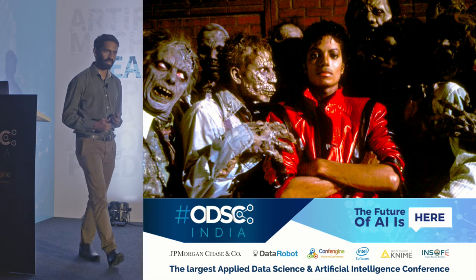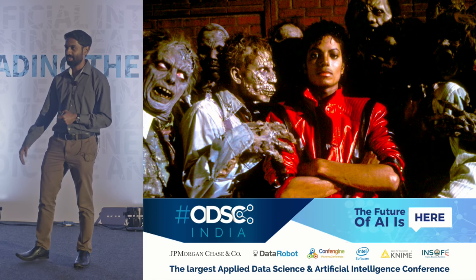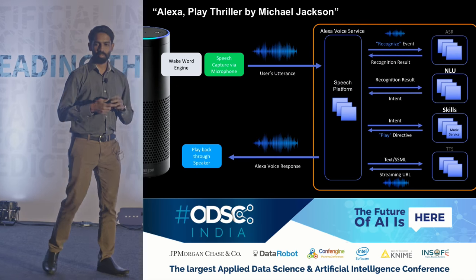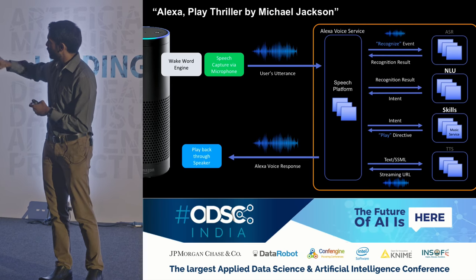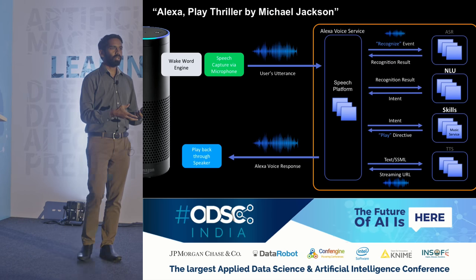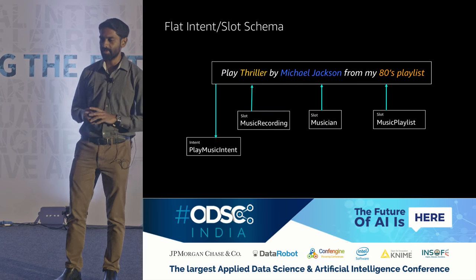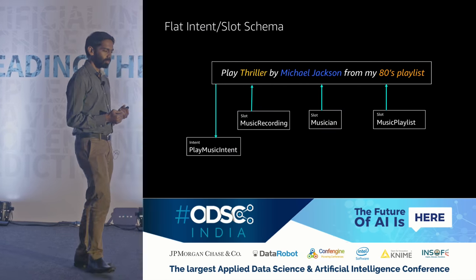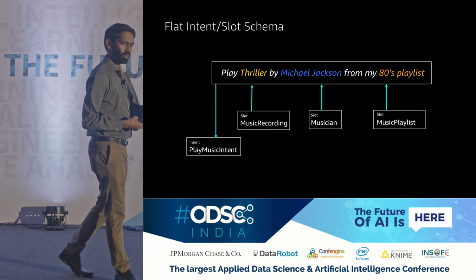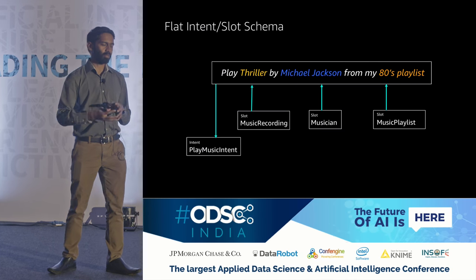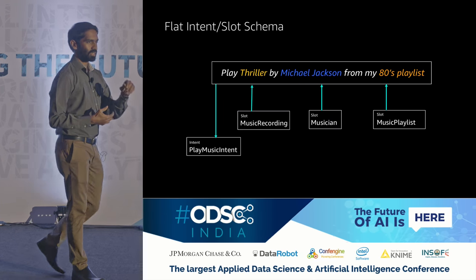I'll use one specific example — Michael Jackson's Thriller, one of the greatest music videos ever. Suppose someone says 'Alexa, play Thriller by Michael Jackson.' The ASR does its work fairly easily, picking up what the user said, and now it goes to the NLU — natural language understanding. When someone says 'Alexa, play Thriller by Michael Jackson from my 1980s playlist,' Alexa picks out three things: the domain (clearly music), the intent (to play a certain track — the play music intent), and slots (variables in the utterance — music recording, musician's name, and playlist).